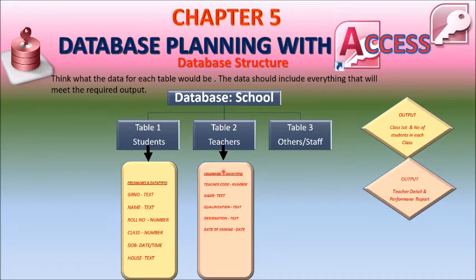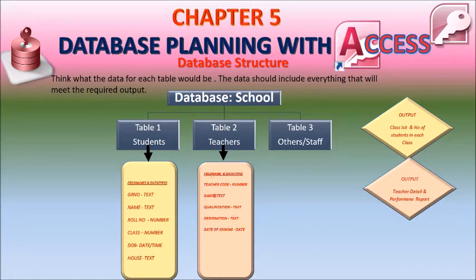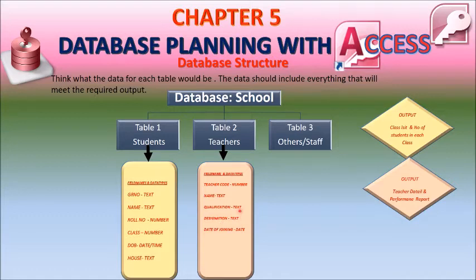The second table is Teachers. The structure designed for the teachers table includes: teacher code, name, qualification, designation, and date of joining. Data types are set according to each field name. Designation refers to the post — for example, Hindi teacher, English teacher, science teacher, Marathi teacher, principal, AHM, supervisor, etc. Date of joining refers to when the teachers started working in the school.